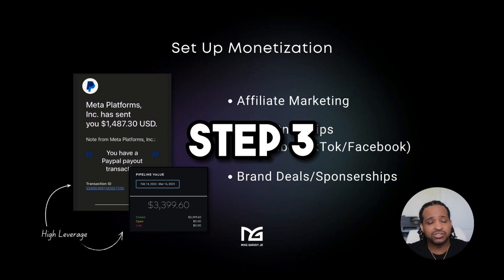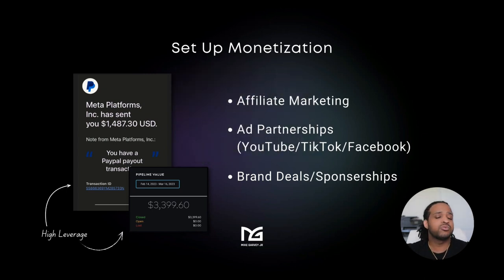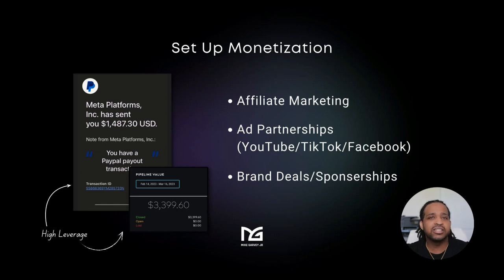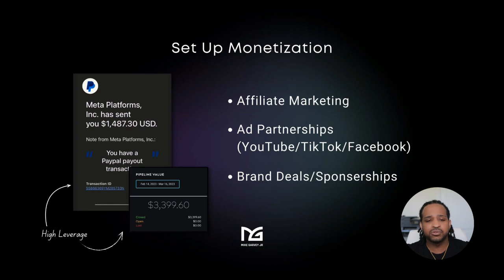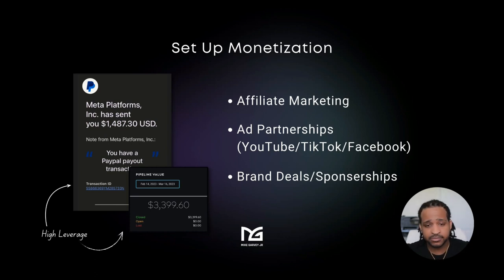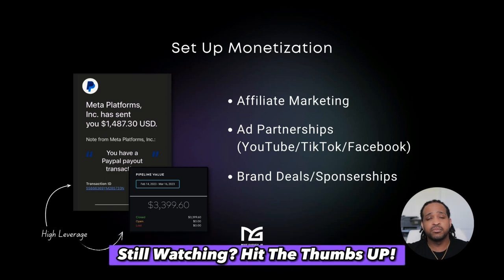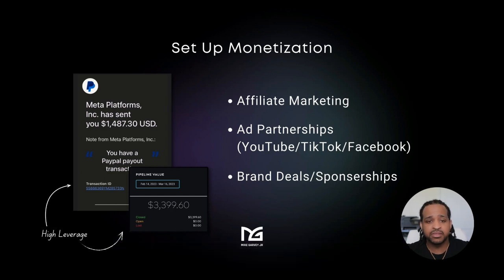The next step is to set up your monetization — probably one of the most important parts because you want to get paid. Once you've selected your niche and created your brand, you need to figure out how you primarily want to get paid. The most popular option under the ghost commerce model is affiliate marketing. It's the most popular because it's one of the most lucrative and beginner-friendly methods of setting up monetization.